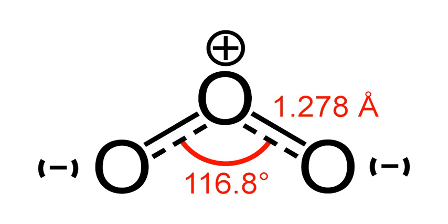In standard conditions, ozone is a pale blue gas that condenses at progressively cryogenic temperatures to a dark blue liquid and finally a violet-black solid. Ozone's instability with regard to more common dioxygen is such that both concentrated gas and liquid ozone may decompose explosively at elevated temperatures or fast warming to the boiling point. It is therefore used commercially only in low concentrations.